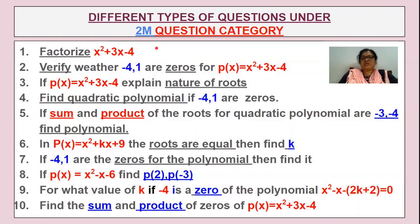I have taken a single quadratic polynomial, that is x squared plus 3x minus 4. The first one is a direct question: factorize the quadratic polynomial. The second question: verify whether minus 4 and 1 are the zeros of the quadratic polynomial. The third question: if the quadratic polynomial is given, you have to find out the nature of roots — whether they are real, not real, or equal. The fourth question: find the quadratic polynomial if the roots are given.